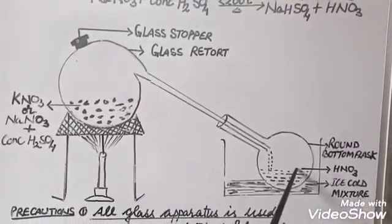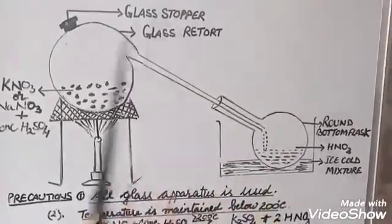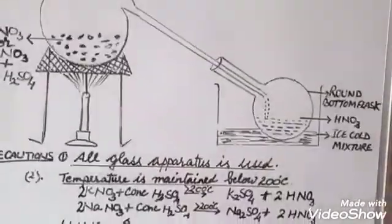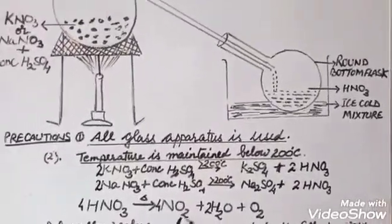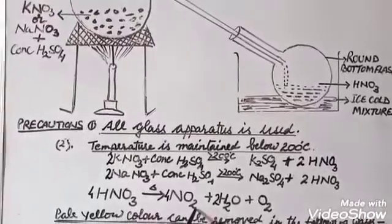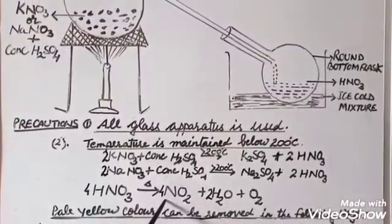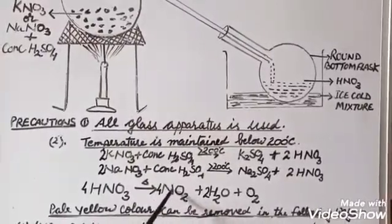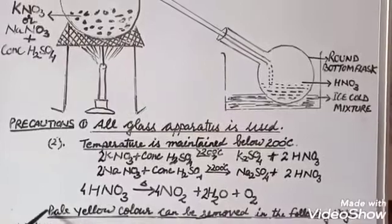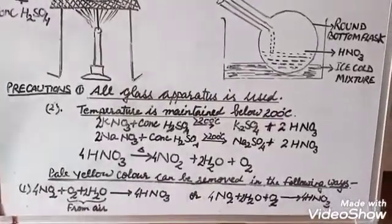Nitric acid obtained here is pale yellow colored because when we prepare it, some nitric acid gets decomposed to give brown fumes of nitrogen dioxide which dissolves in the surrounding and imparts it pale yellow color. This pale yellow color can be removed in the following ways.